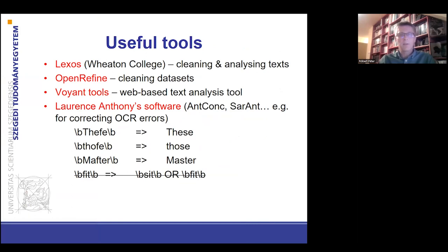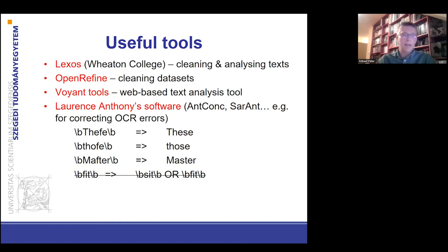Finally, I'd like to mention some useful digital humanities tools such as Lexus, which you can use for cleaning and analyzing texts. Open Refine is also a very useful tool to clean datasets and spreadsheets. Voyant Tools is a web-based text analysis tool, and I'd also like to recommend Laurence Anthony's software — AntConc and Sorrent — with the help of which you can correct common optical character recognition errors.